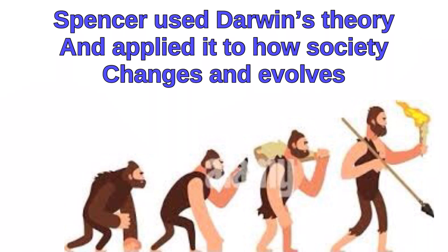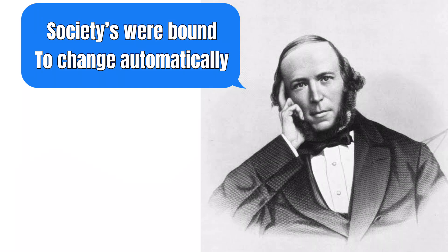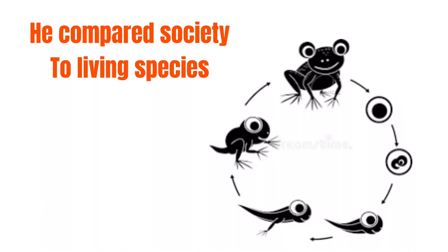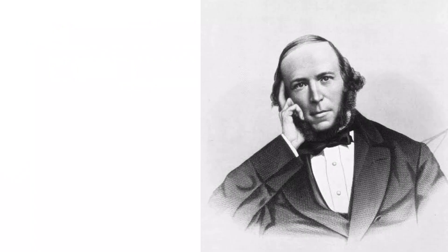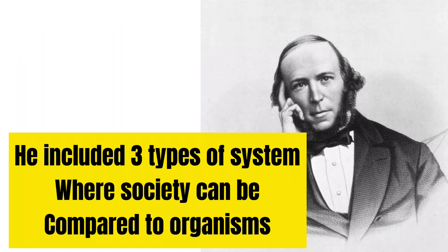To Spencer, societies were bound to change automatically. In his theory, he compared society to living species, and he included three types of systems where societies can be compared to organisms.